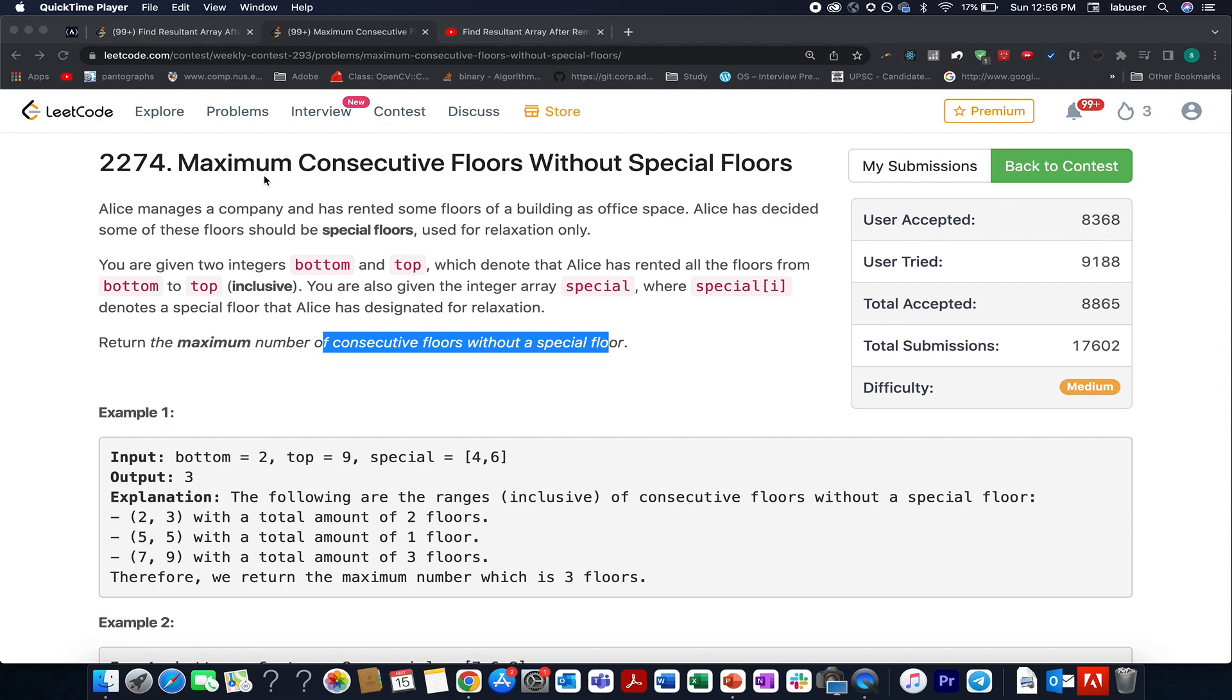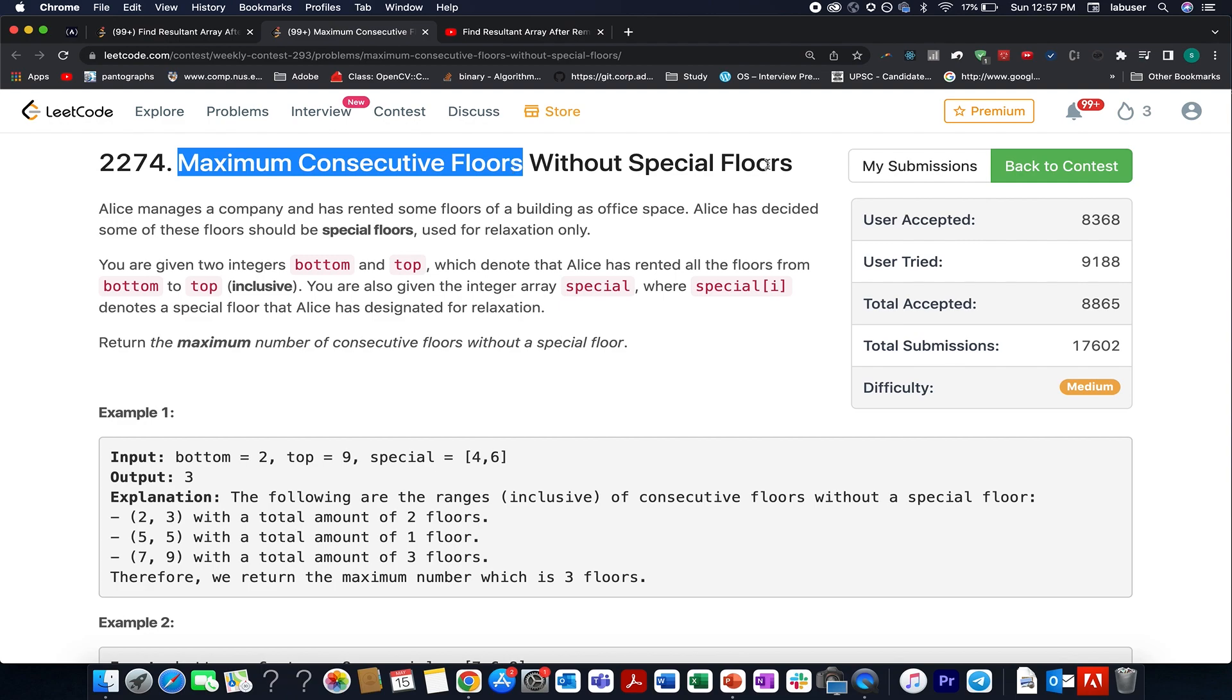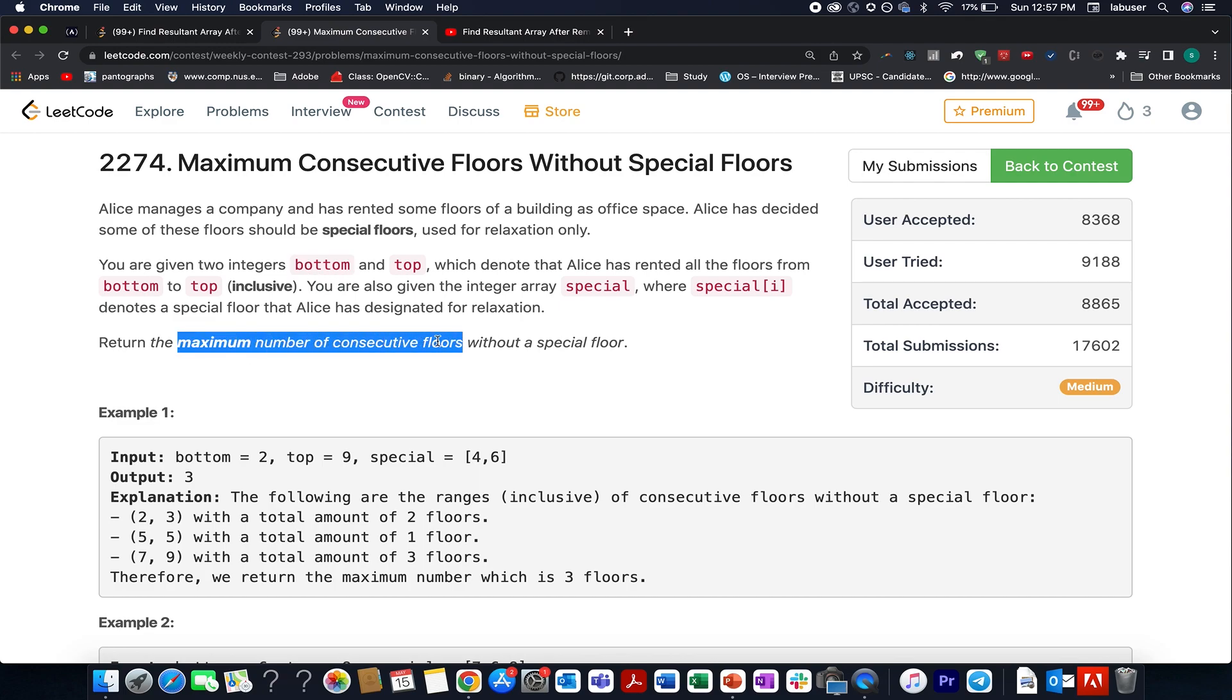The question that we are doing is maximum consecutive floors without special floors in it. In this question, we are given a building. We are told the bottom index and topmost index of the floors, and we are given special floors acting as relaxing floors. We need to return the maximum number of consecutive floors without any special floors in between them.